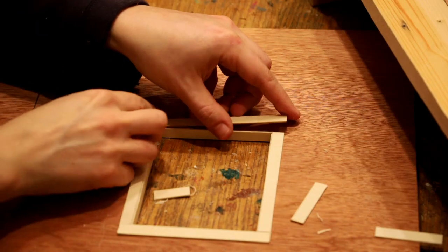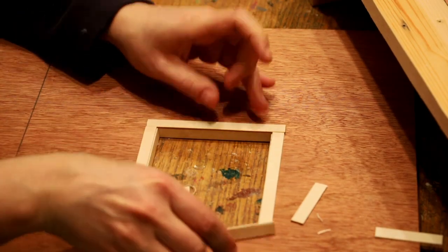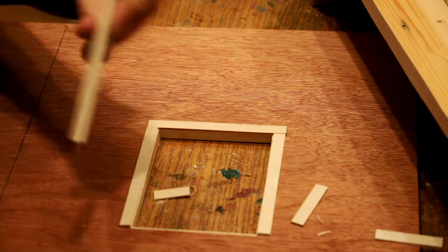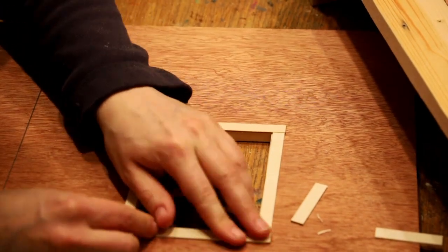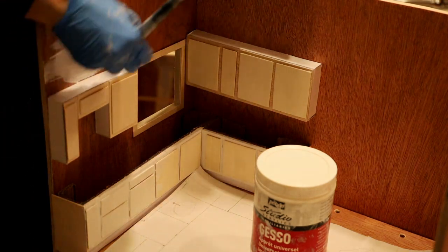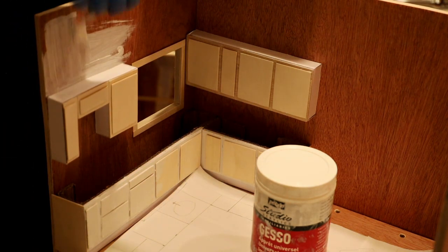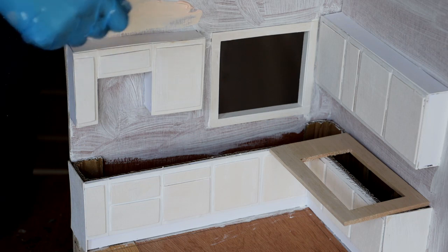Then I've added some frames inside and outside every window opening, and primed the whole thing including the cabinets with white gesso that I've painted with two coats of acrylic paint.